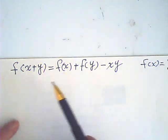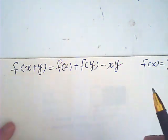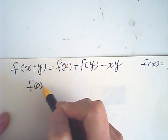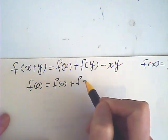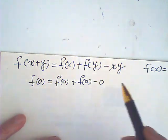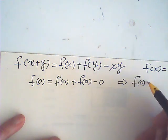Okay, well, first, if x and y are zeros, f of zero is equal to f of zero plus f of zero minus zero. Therefore, f of zero is zero.